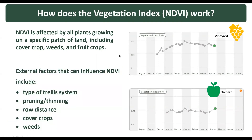External factors that can influence NDVI include the type of trellis system, pruning or thinning, row distance, and cover crops or weeds. For example, due to a different trellis design, an NDVI value of 0.8 is often seen in table grape blocks, but it is rarely this high for wine grapes.